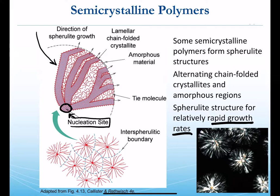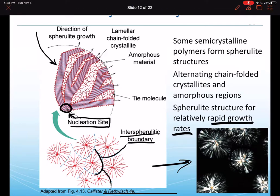Further branching can occur as the lamellae extend further from the nucleation site. Ultimately, spherulites can impinge on one another — we see inter-spherulitic boundaries, that is, the boundary between one spherulite and another. This explains the result here, where several spherulites are shown — perhaps five or six spherulites visible in the isotactic polypropylene sample.